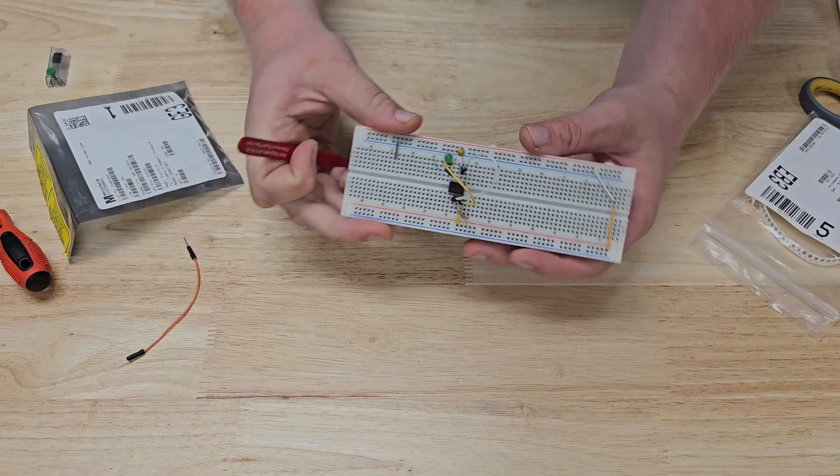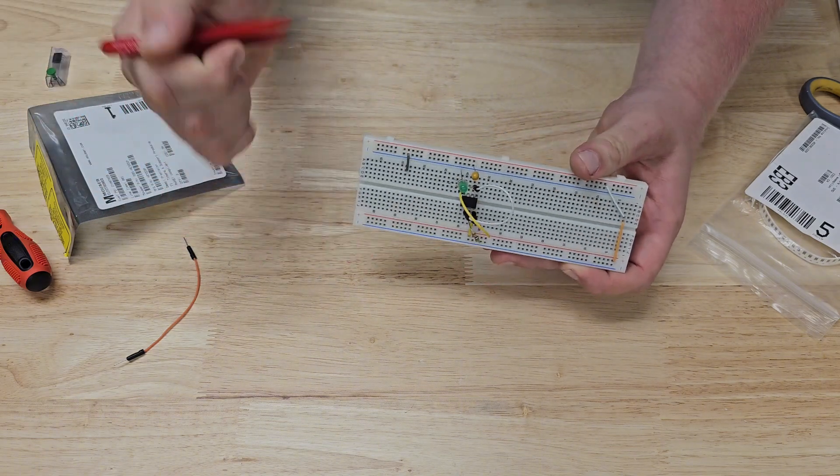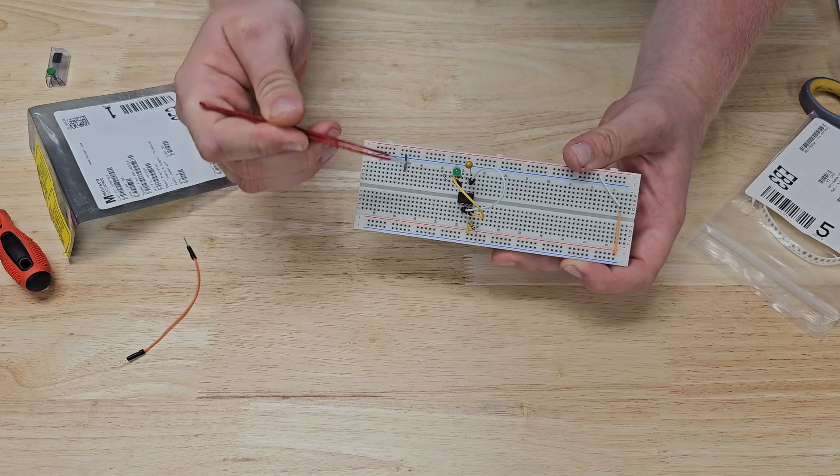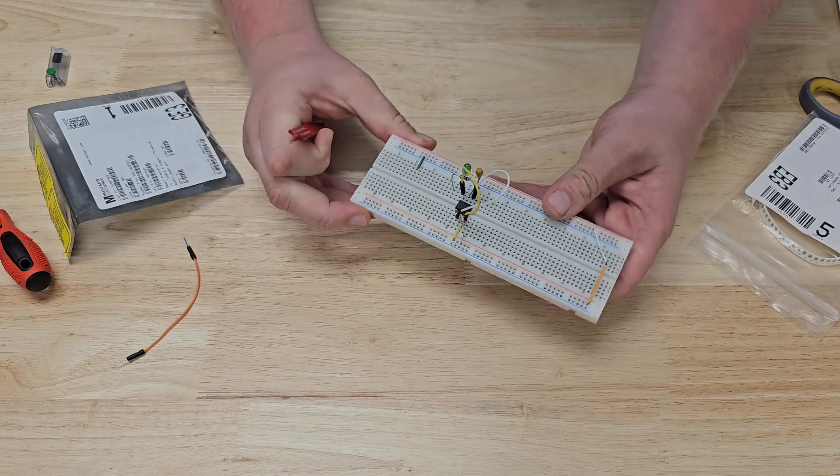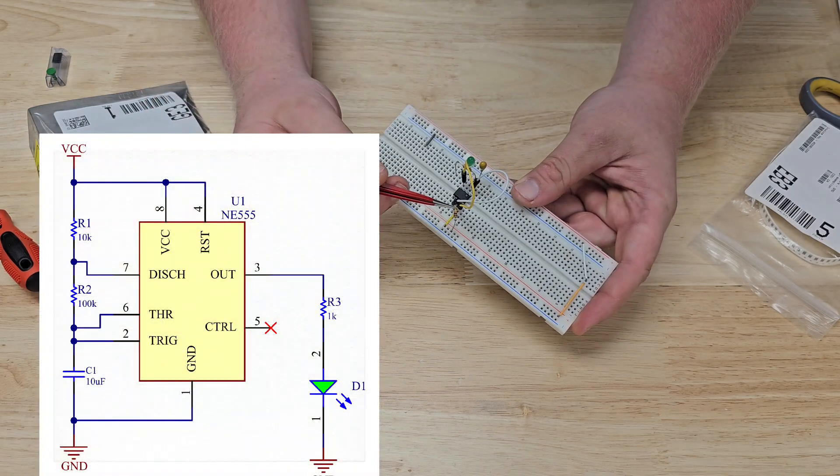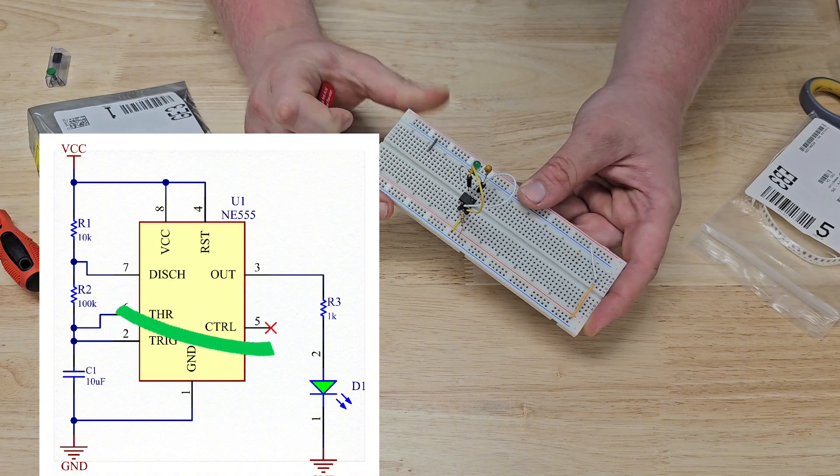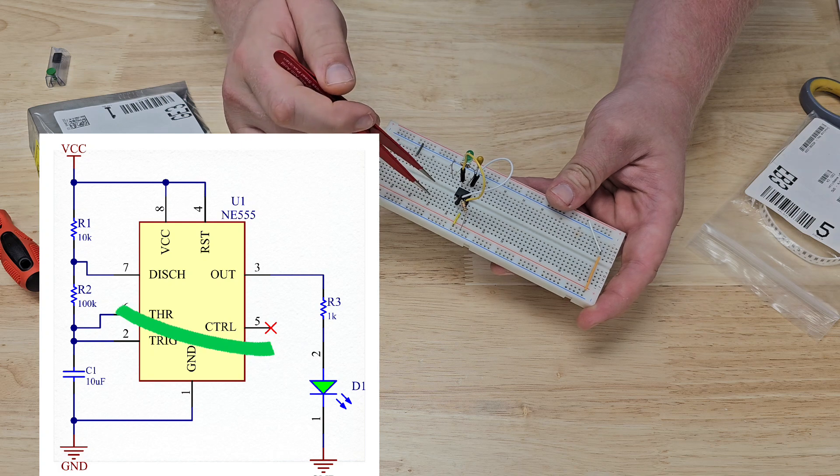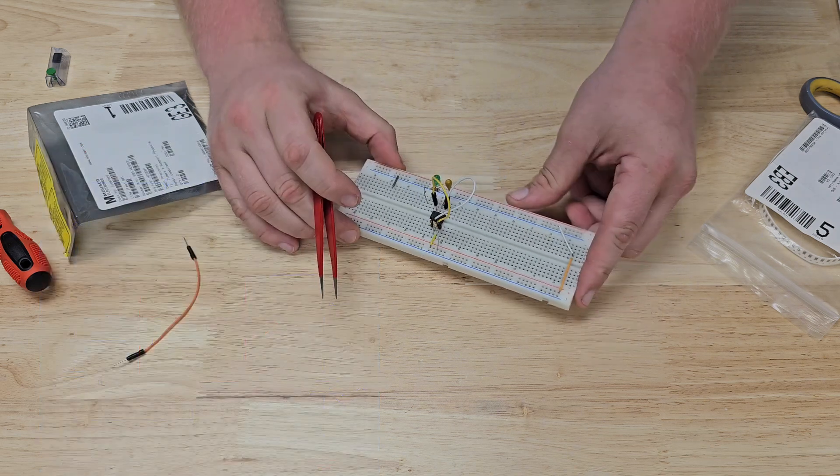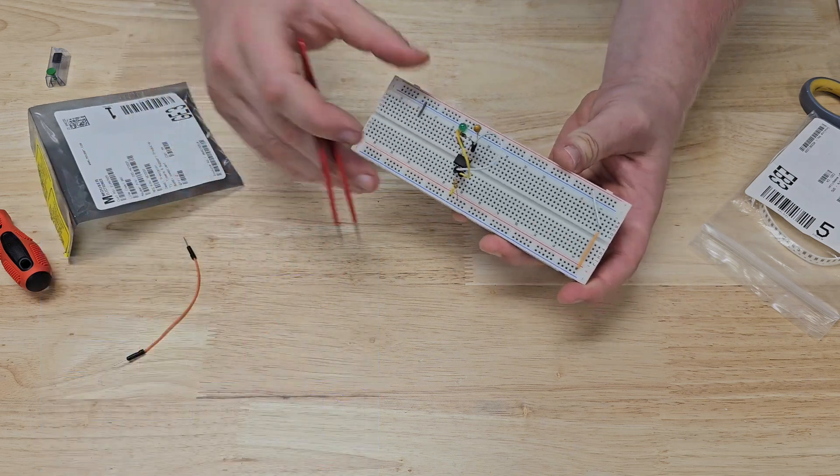So throw a 555 timer at it, right? A simple circuit to do. The problem I have is I don't have the proper resistor value, so I need a 100,000 ohm resistor. I've already got the right R1 resistor and the right C1 capacitor value, but I don't have a 100,000 ohm resistor in a through-hole. I've looked all around the lab, couldn't find one.